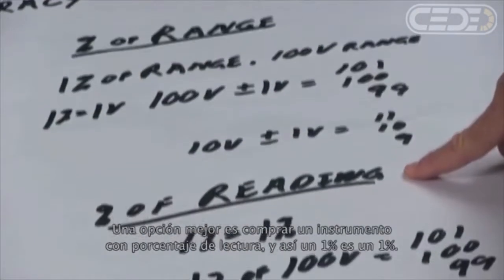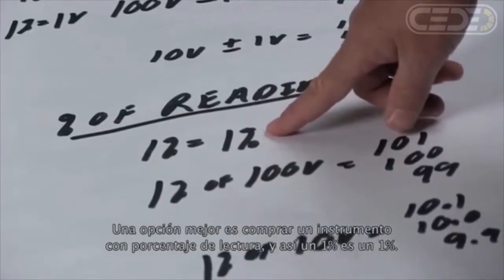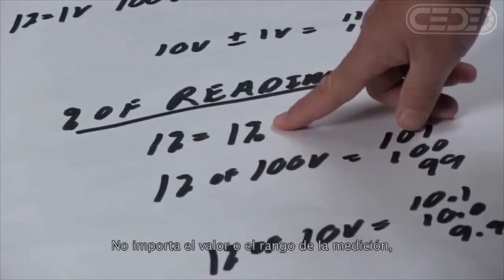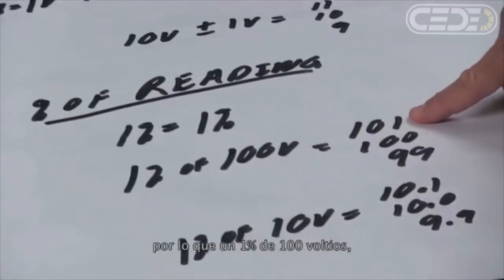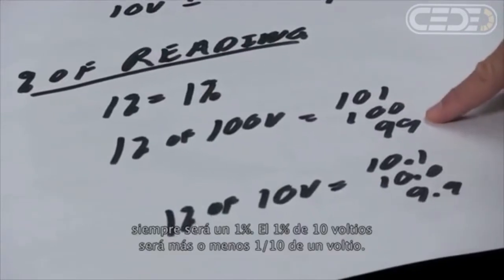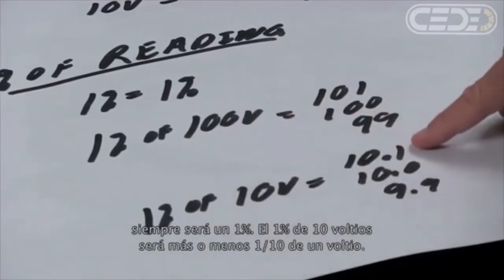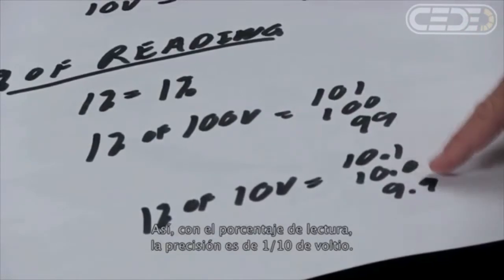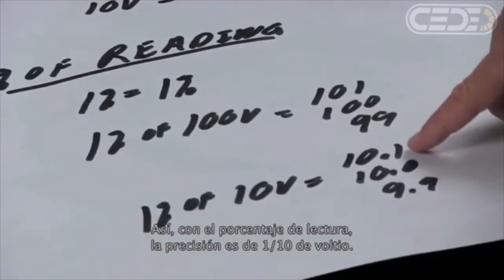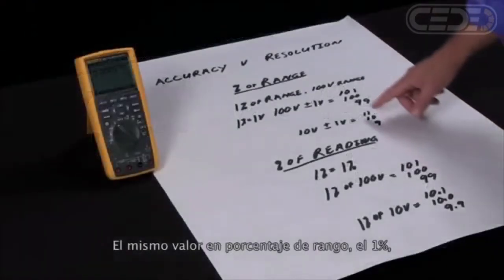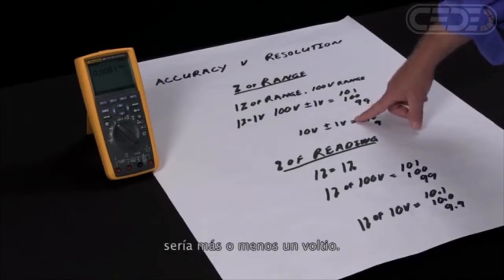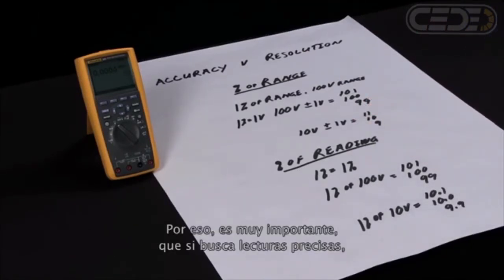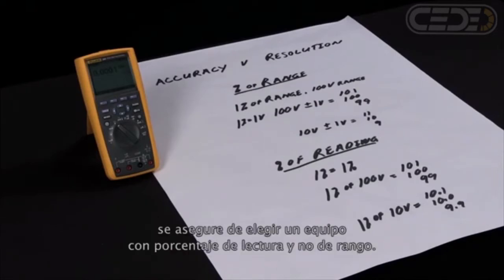A better way is to buy an instrument that has percent of reading — then one percent is one percent, it doesn't matter what value or what range you're on. One percent of a hundred volts is plus or minus one volt. One percent of ten volts is plus or minus a tenth of a volt. So it's very important if you're looking for accurate readings to make sure you select a device with percent of reading versus percent of range.